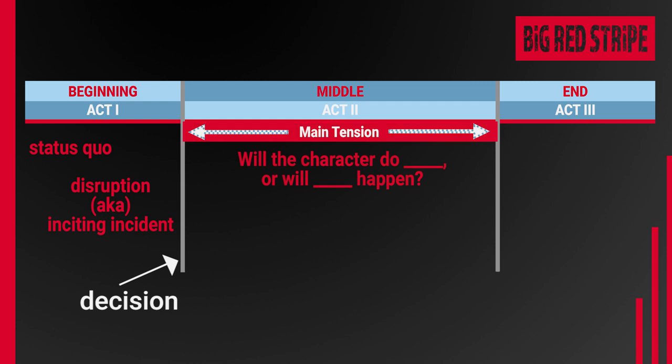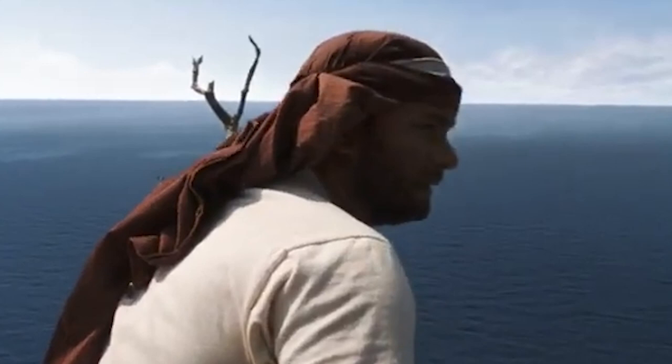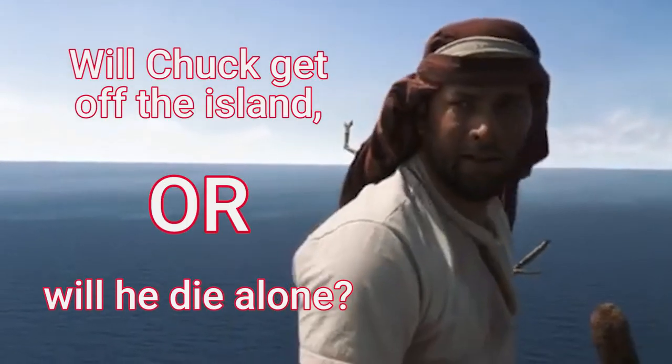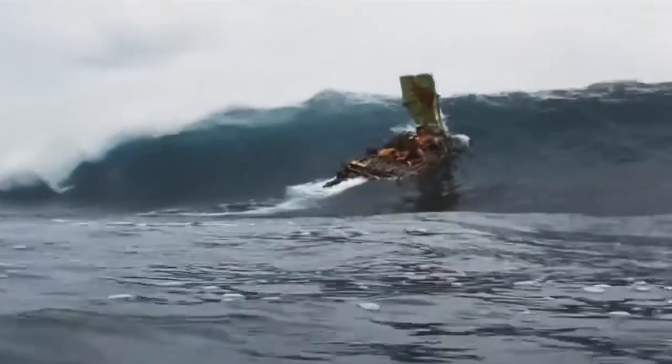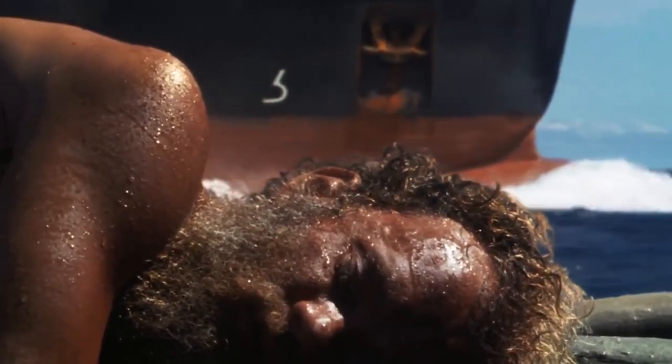As a result of the inciting incident, the protagonist now has a choice: they can choose to deal with the disruption and resolve the issue — thus entering the second act — or they can ignore it and go back to their everyday life. But in that case you have no story. So what we have in the first act is: a status quo, an inciting incident, and then the protagonist's decision to engage and try to resolve the disruption. That decision sends them into the second act, where they pursue their goal, have difficulty along the way, and eventually get an answer to the main tension question.